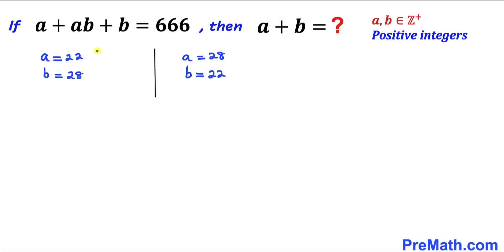Here's our final step. We have these values for a and b in two scenarios, and now we find the value of a plus b. In our case, a is 22 and b is 28. If we add them together, that gives us 50.